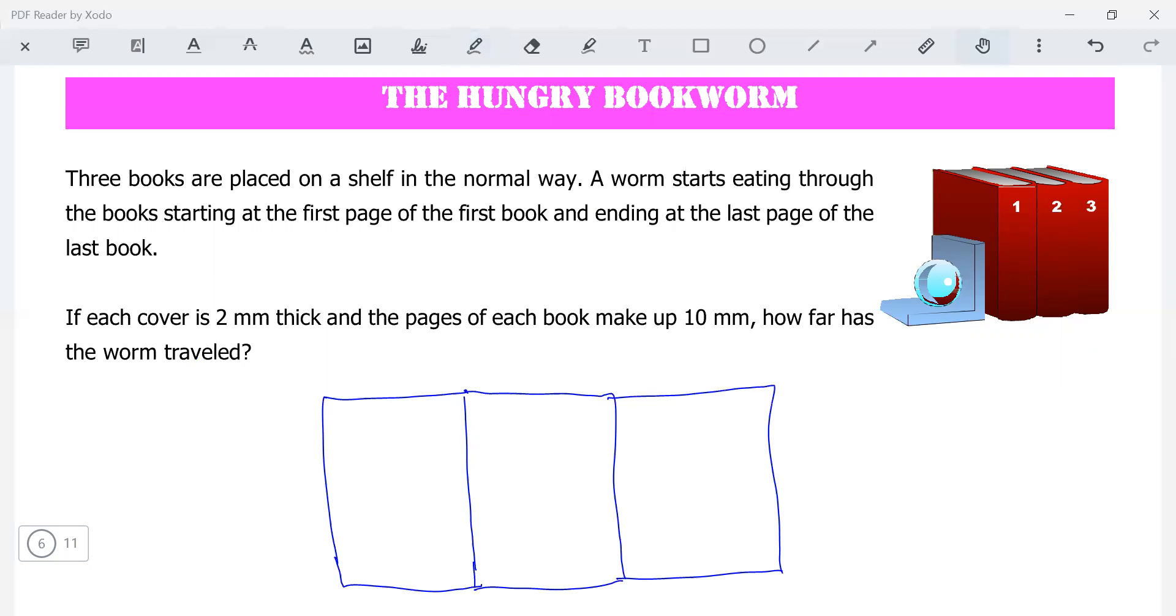A worm starts eating through the books, starting at the first page of the first book and ending at the last page of the last book. Each cover is two millimeters thick and the pages make up 10 millimeters. So if you take the covers, that's a cover there, that's a cover there. That's two, that's ten, that's two.